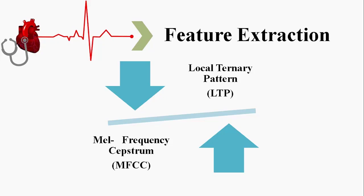Local Ternary Pattern (LTP) is an extension of Local Binary Pattern (LBP). Unlike LBP, it does not threshold the pixel into 0 and 1; instead, it uses a threshold constant to threshold into 3 values.